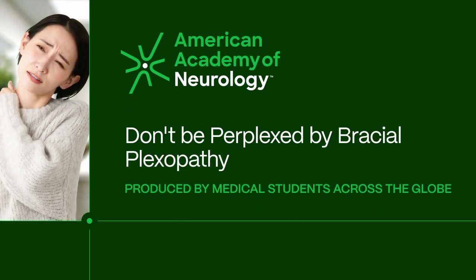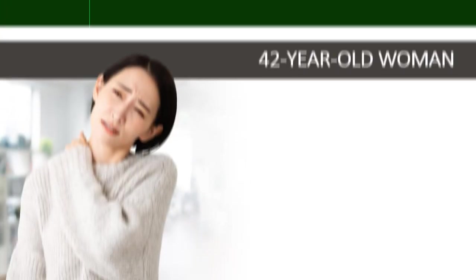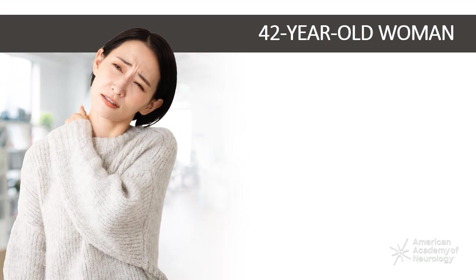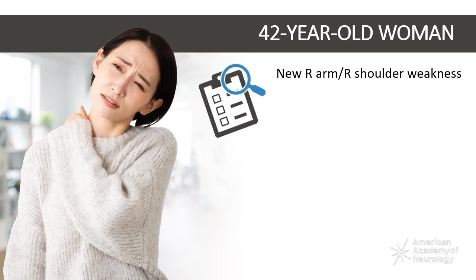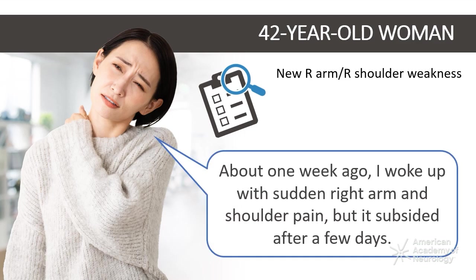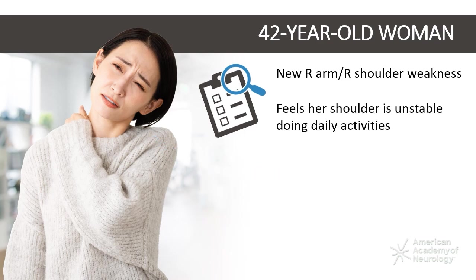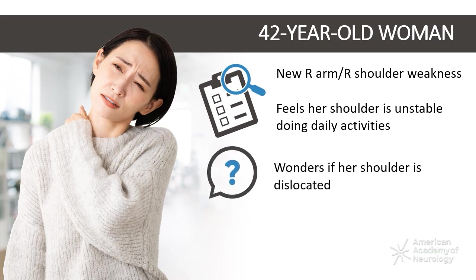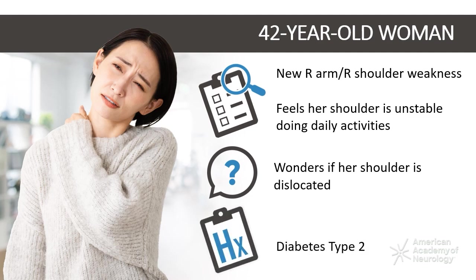Don't be perplexed by brachial plexopathy. A 42-year-old female presents to the clinic for new onset weakness in her right arm and shoulder pain. About one week ago she woke up with sudden right arm and shoulder pain, which subsided after a few days. She now feels weakness in her right arm and shoulder, and feels like her shoulder is unstable while performing daily activities, wondering if her shoulder may be dislocated. Her past medical history is significant for type 2 diabetes.